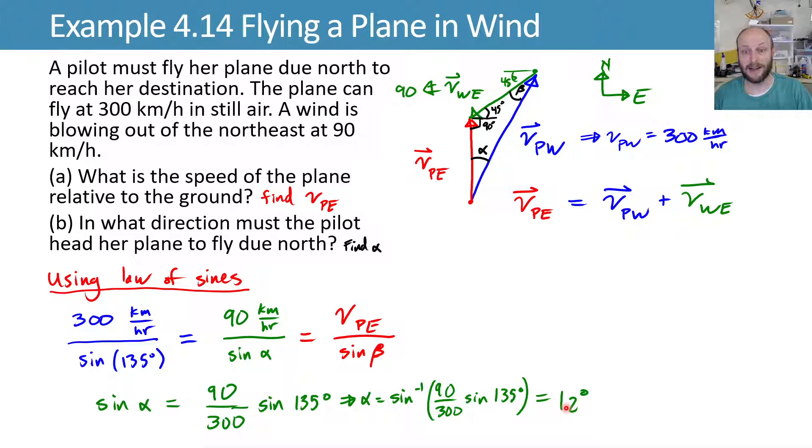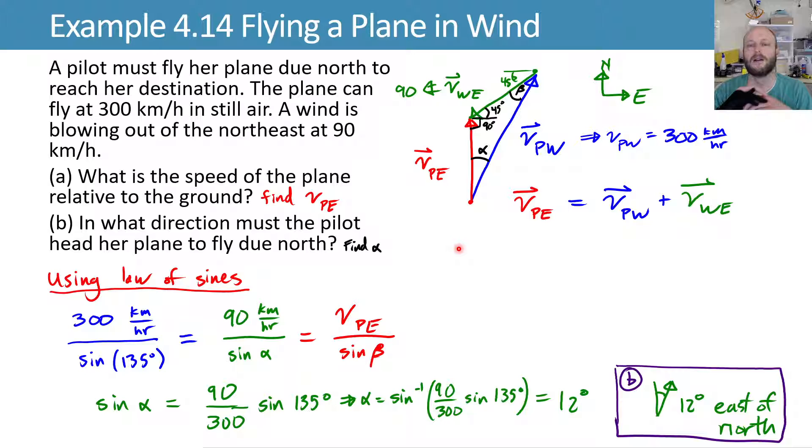So this says that the direction the pilot must fly has to be 12 degrees east of north. So this alpha is 12 degrees. So far, so good. But now we need to solve for either beta or VPE.